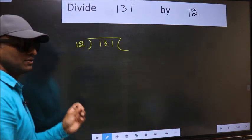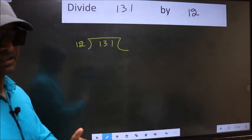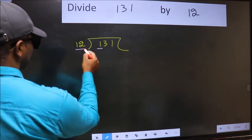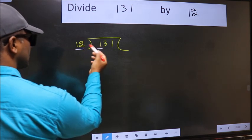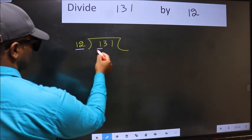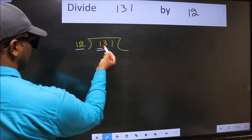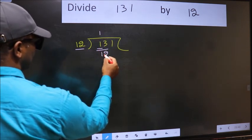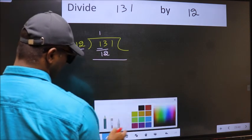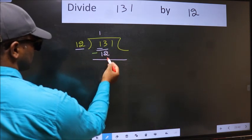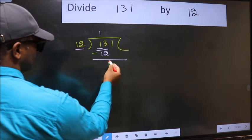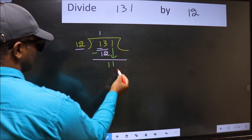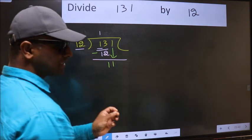This is Step 1. Here we have 1, and here 12. Since 1 is smaller than 12, we take two numbers: 13. A number close to 13 in the 12 times table is 12 — 12 once is 12. Now subtract: 13 minus 12 equals 1. After this, bring down the next number, so 1 comes down.